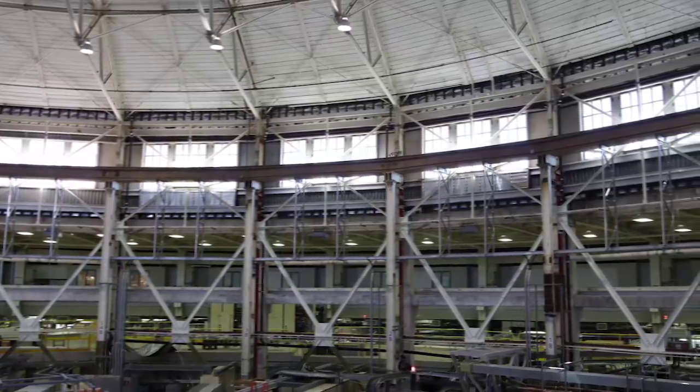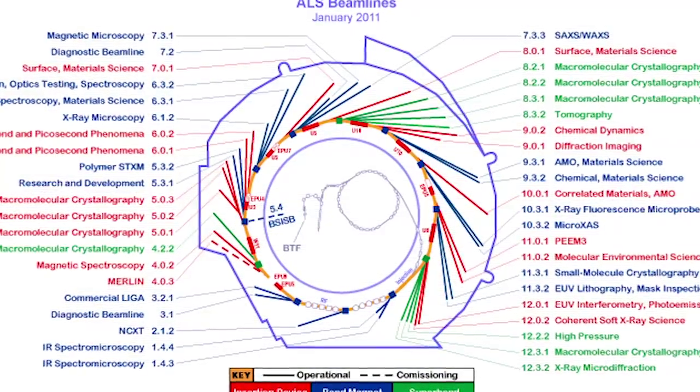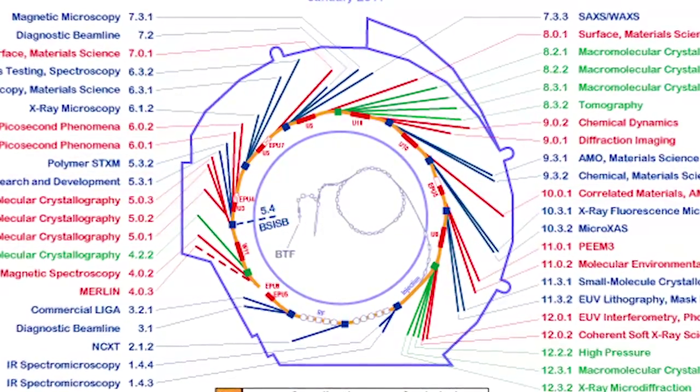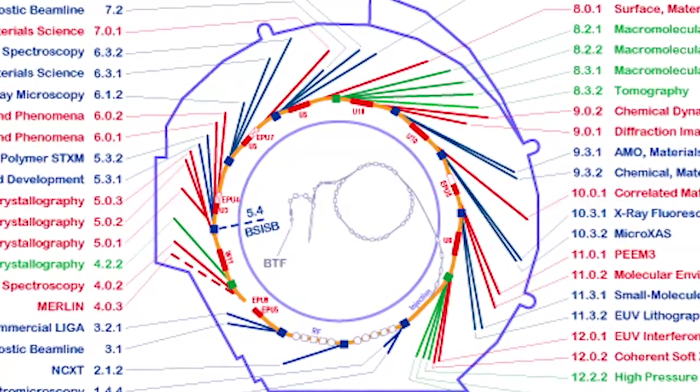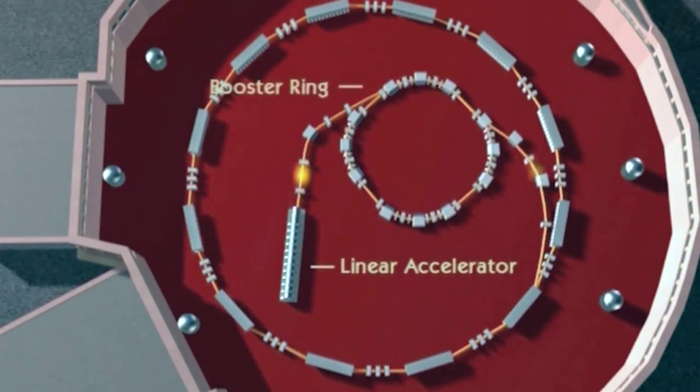The Advanced Light Source is a giant X-ray machine. In fact, it's more than one X-ray machine. It is 40 X-ray beams. It has as its heart a particle accelerator.